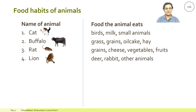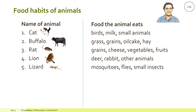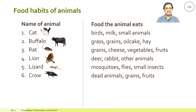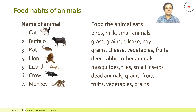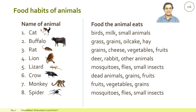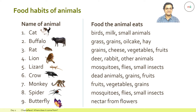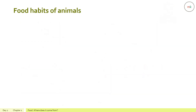A lion likes to eat deer, rabbit, and other animals. A lizard likes to eat mosquitoes, flies, and small insects. A crow likes to eat dead animals, grains, and fruit. A monkey likes to eat fruit, vegetables, and grains. A spider likes to eat mosquitoes, flies, and small insects, whereas the butterfly likes to eat nectar from plants.